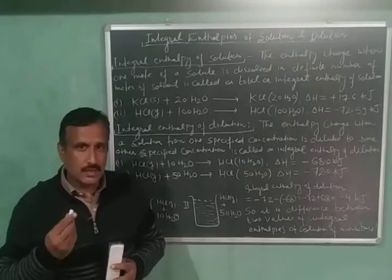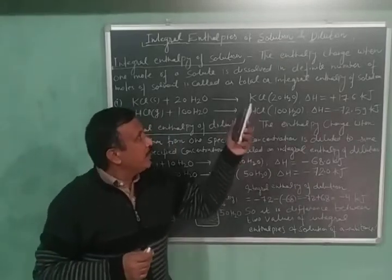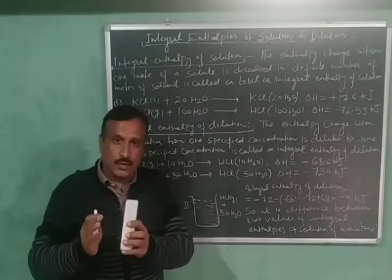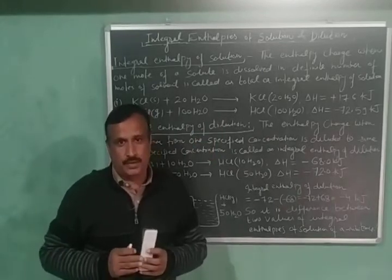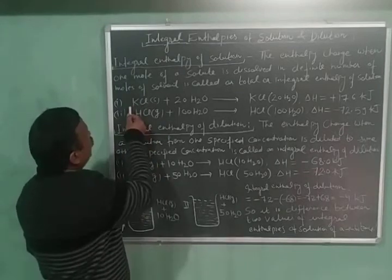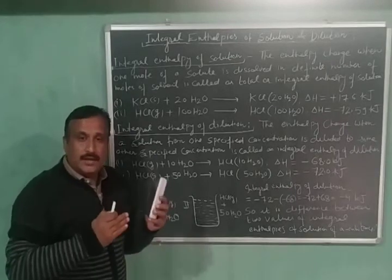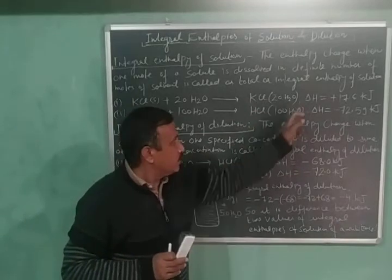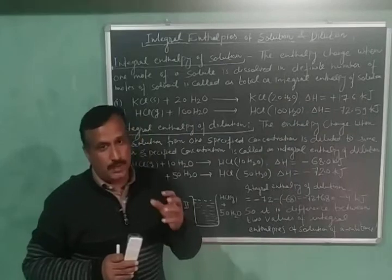Now let us define the integral enthalpy of solution. The enthalpy change when one mole of a solute is dissolved in a definite number of moles of solvent is called the total or integral enthalpy of solution. For example, one mole of potassium chloride is dissolved in 20 moles of water. Heat is absorbed and the integral enthalpy, delta H, is equal to plus 17.6 kilojoules per mole.